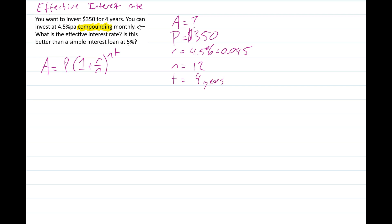Now we've just sub it in. We've got 350 times one plus 0.045 divided by 12 to the 12 times 4. Let's go and find out what that is.